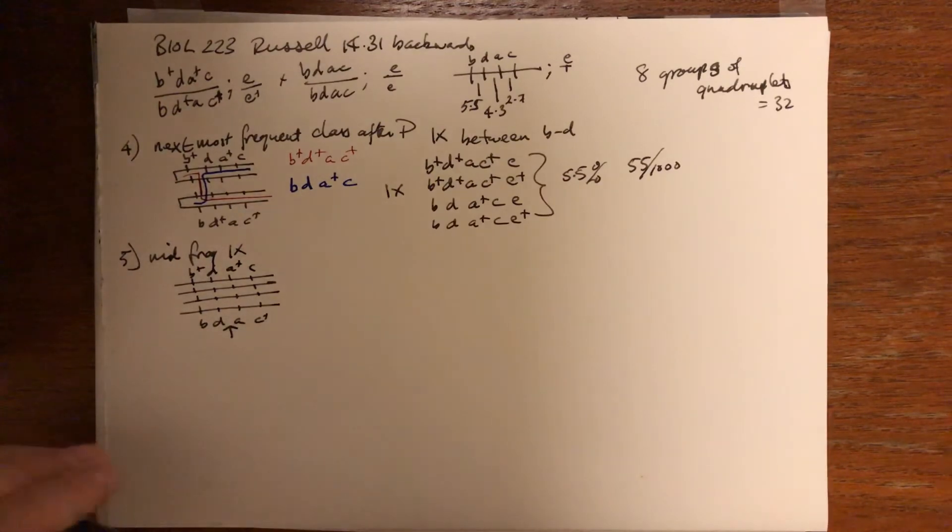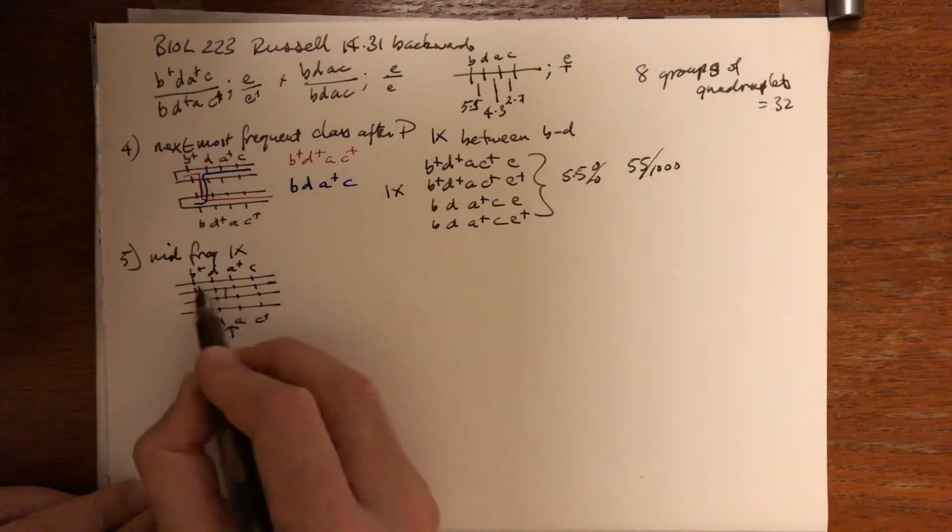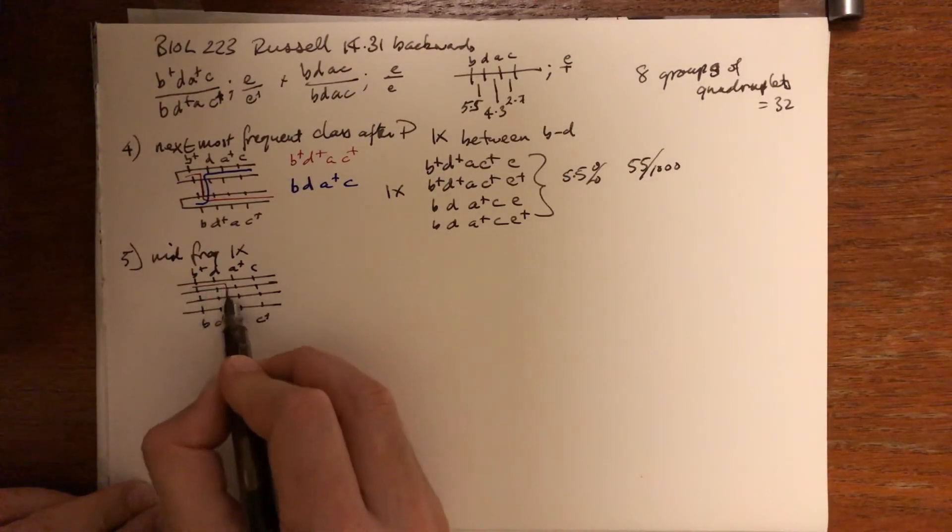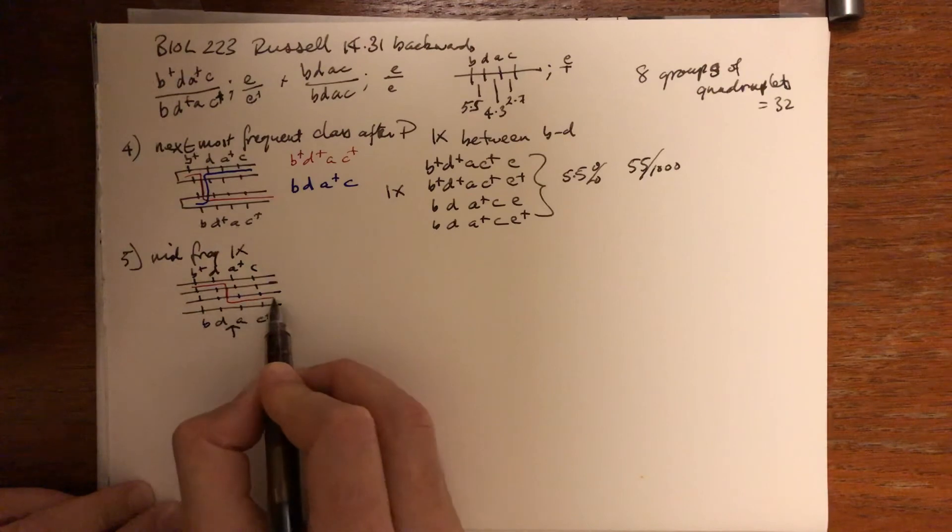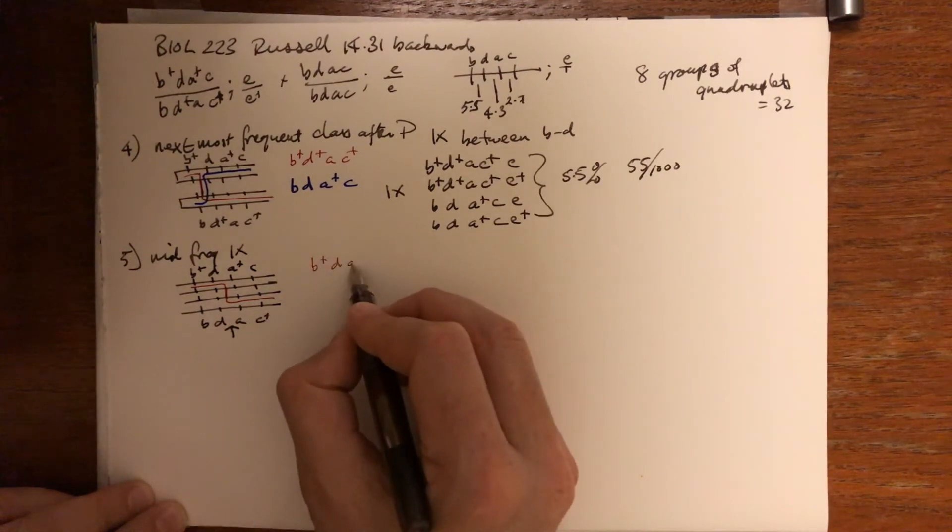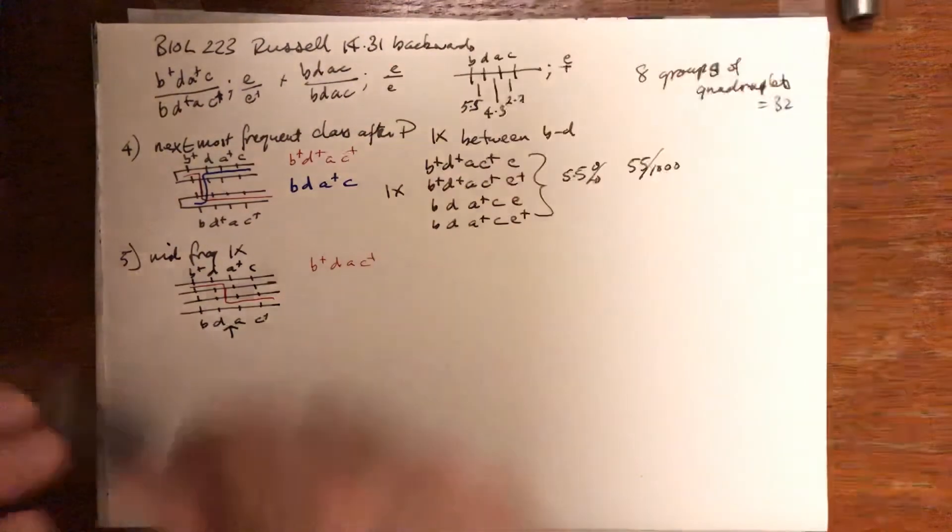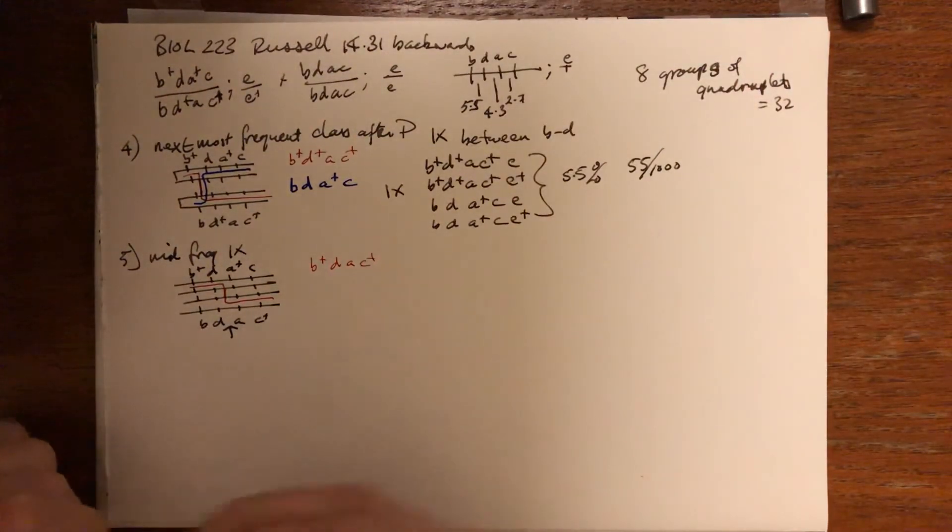We expect between D and A is going to generate the next most frequent class. We see here then that we will get B+ D A C+ and its reciprocal, which will be coming from the other strand, B...